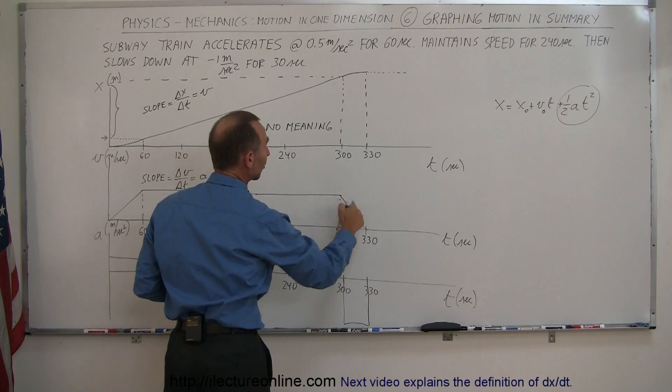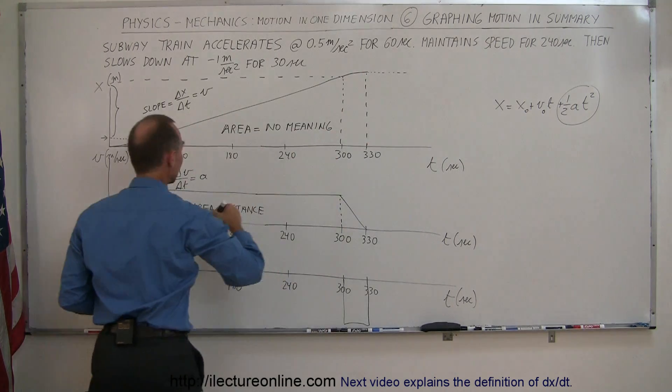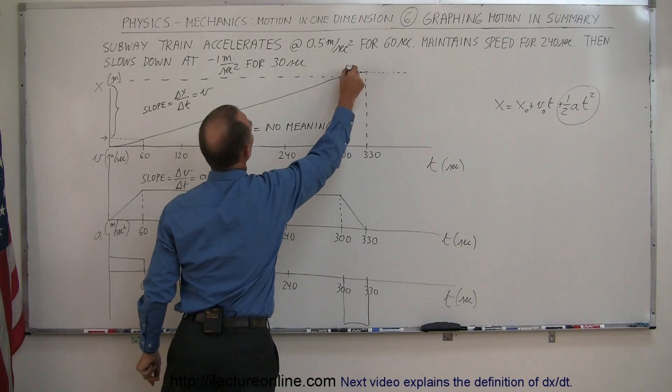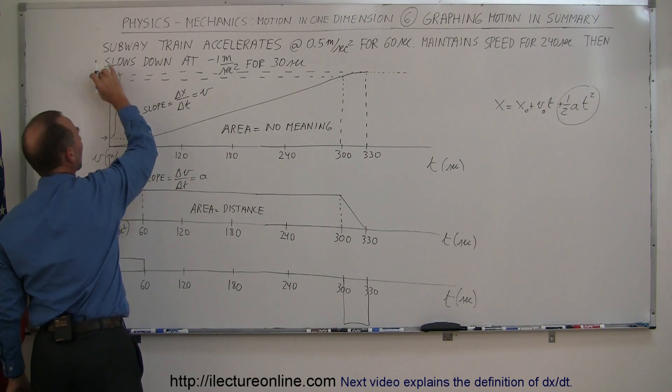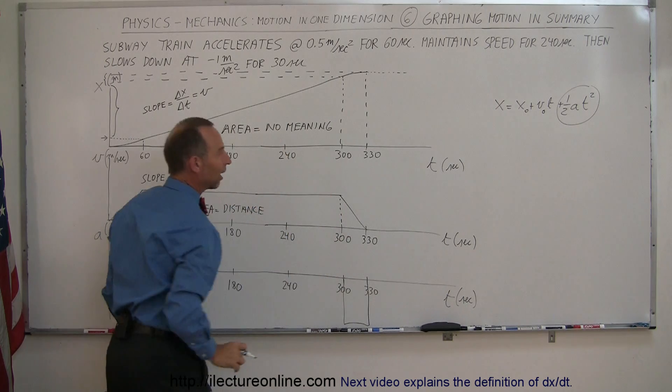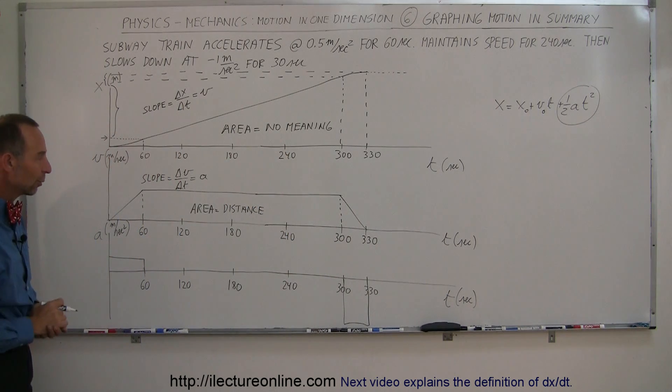Finally, this area right here represents the distance traveled while it's slowing down. If we take this curve over here, this distance or this amount represents the area of that curve right there. There you see the relationship.